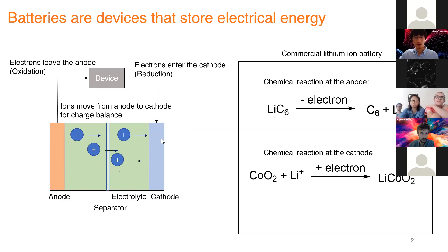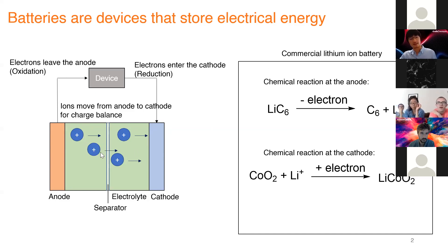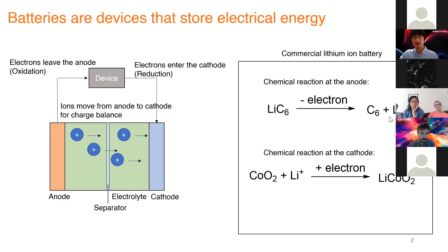When you discharge your battery, you hook it up to your device, the electrons start leaving your anode, enter your device and do work — powers your phone, plays music. Then the electrons leave your device and enter your cathode where reduction happens. Since electrons are negatively charged, as those negatively charged particles move from the anode to the cathode, you need a charge balance — so positive ions, in this case lithium ions, move from your anode to your cathode. In a commercial lithium-ion battery, the anode is a lithium graphite material. It oxidizes, releasing lithium ions and electrons that travel to the cobalt oxide cathode, reducing it to form lithium cobalt oxide.